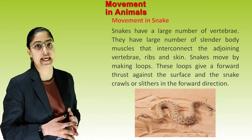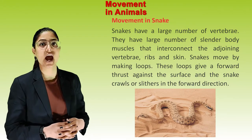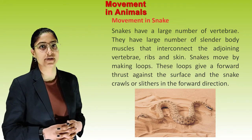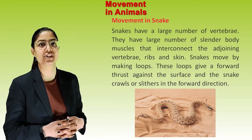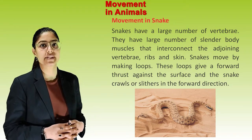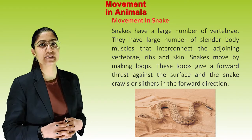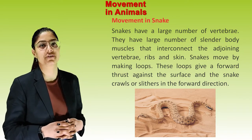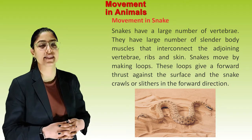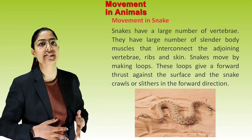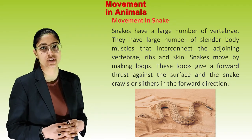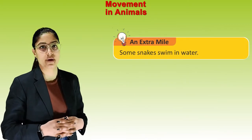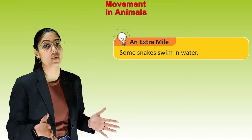Movement in snake. Snakes have a large number of vertebrae and slender body muscles that interconnect the adjoining vertebrae, ribs, and skin. Snakes move by making loops, which give a forward thrust against the surface, and the snake crawls or slides in the forward direction. Some snakes can also swim in water.